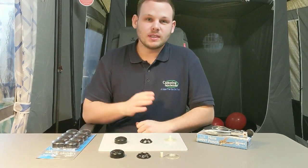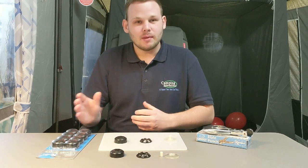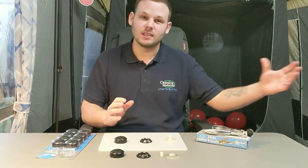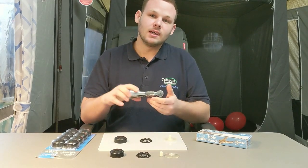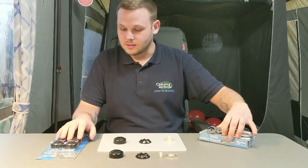Now these are made for 2017 onwards Kamper awnings. They can be used with Kamper awnings that are beforehand, so 2016, 2015, with this Limpet Hole Punch Kit. All that does is puts a hole in the rear of your fabric so you can use the Limpet Fix System.